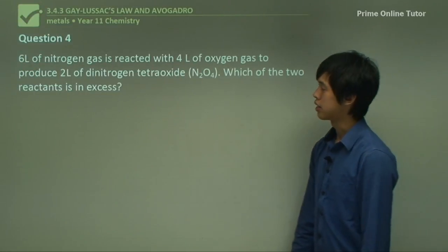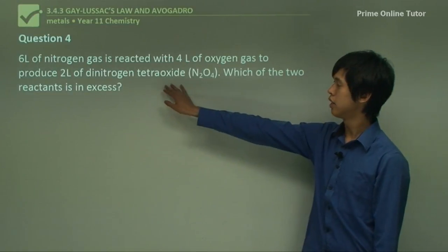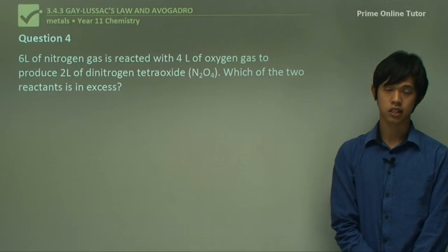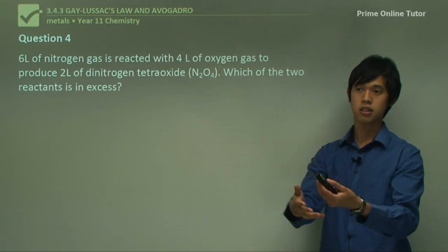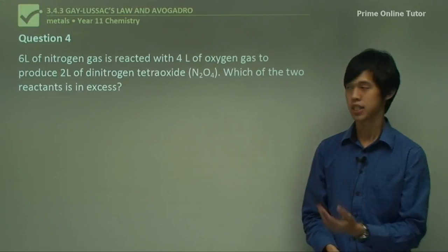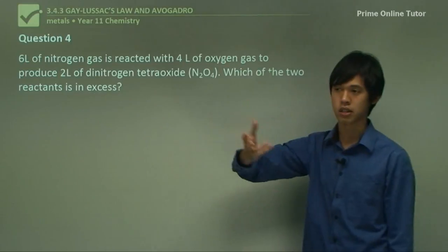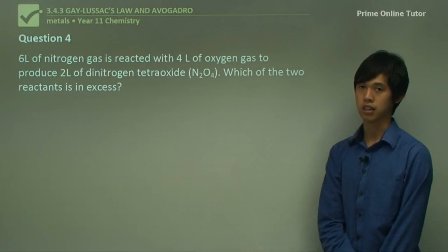Question 4. 6 liters of nitrogen gas is reacted with 4 liters of oxygen gas to reduce 2 liters of dinitrogen tetraoxide. Which of the two reactants is in excess? So this is another typical problem. We've put in gases into a system, we get our product out, but which one has left over gas? And you might be tempted to think that it's 6 liters of nitrogen. It's got to be nitrogen because there's more of it. But that's not always the case, but we'll figure it out in this question.